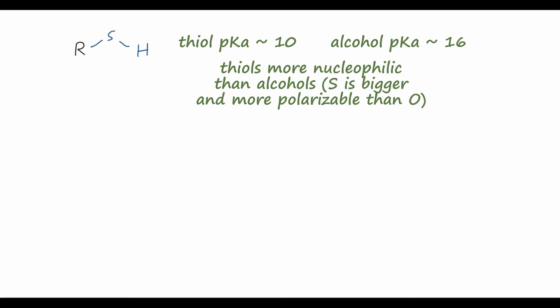They are also much more nucleophilic than alcohols. So whereas alcohols are only weakly nucleophilic on that oxygen, thiols are actually pretty strong nucleophiles. And both of these things are because of the polarizability of the sulfur atom. So because sulfur is so much bigger than oxygen, it's much more polarizable, and it's able to be much more nucleophilic.